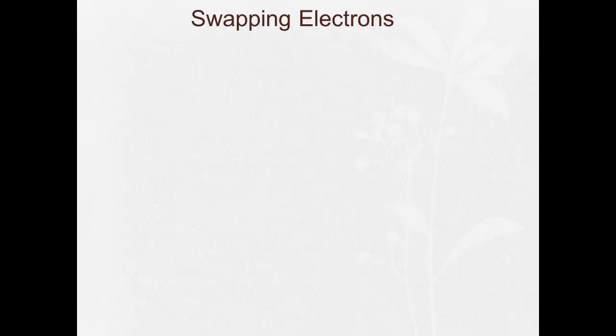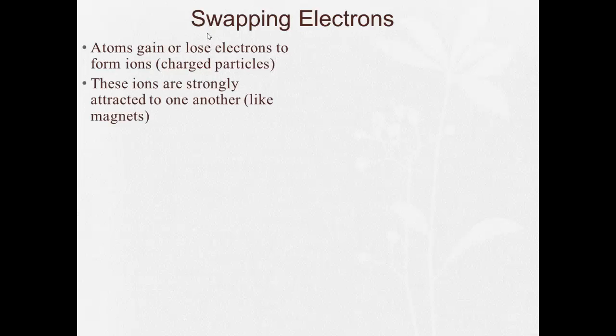And the first thing that's important about ionic bonding, or the thing to really remember, is the concept of trading, or swapping, or giving away electrons. So in ionic bonding, certain atoms tend to gain or lose electrons to form ions. And then these ions are strongly attracted to one another, kind of like magnets. And the goal for these atoms is to gain or lose enough electrons to form a stable octet.